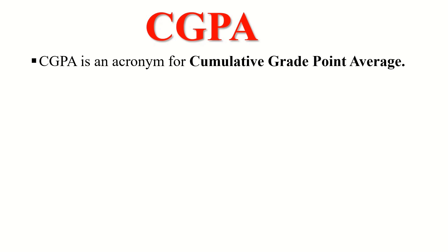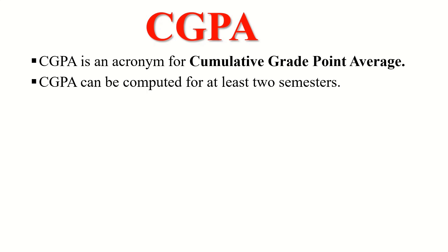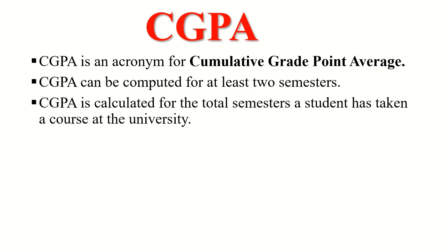CGPA is an acronym for Cumulative Grade Point Average. CGPA can be computed for at least two semesters, so before we can say a result is a CGPA it should be based on two or more semesters. CGPA is calculated for the total semesters a student has taken a course at the university, so the basis of CGPA has to do with the number of semesters you spent at the university.